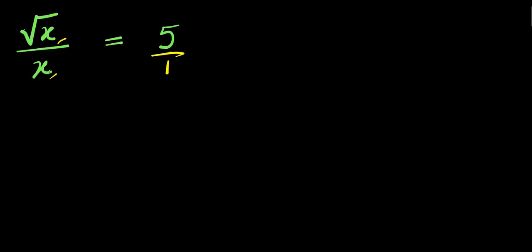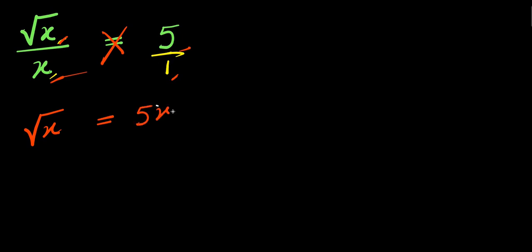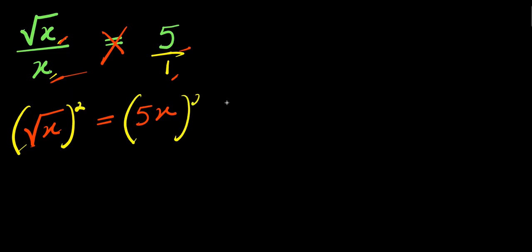We can divide this by 1 and we cross multiply, meaning that the square root of x will multiply 1 and the x will multiply 5. So root x times 1 gives us square root of x, and this equals x times 5, which is 5x. Now let's try to eliminate this square root — to do that, we take the squares of both parts of this equation.